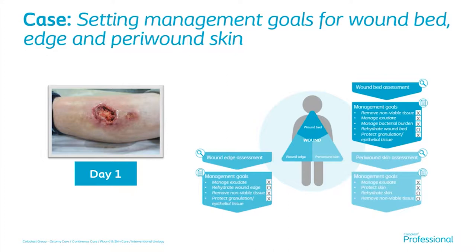We then identify and set management goals for the wound bed, wound edge, and peri-wound skin. The goals here are to remove the non-viable tissue from the wound bed, manage the exudate, manage the bacterial bioburden present, and protect any new and forming granular or epithelial tissue. Management of exudate is key for the peri-wound skin and to reduce any excoriation, and we also want to protect the granular tissue that is present.